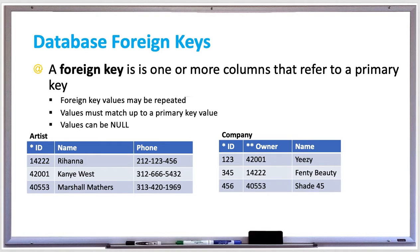The data types of foreign and primary keys must be the same, but the names of the columns can be different. Foreign keys have different rules than primary keys. Foreign key values may be repeated, foreign key values must match up to a primary key value, and foreign key values can also be null. Additionally, multiple foreign keys may refer to the same primary key within the same table, and a foreign key that refers to a composite primary key — meaning a primary key with multiple columns — must also be a composite.